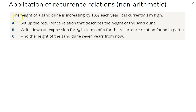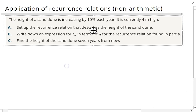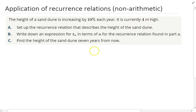So we're doing the height of a sand dune, and it's increasing by 10% each year, and it is currently four metres high. A note here: term one is equal to four. So it begins its life at a height of four metres. Set up the recurrence relation that describes the height of the sand dune.